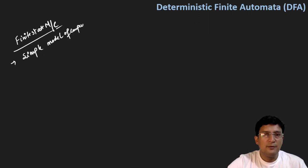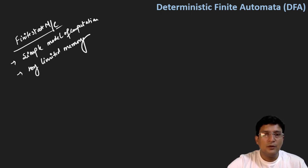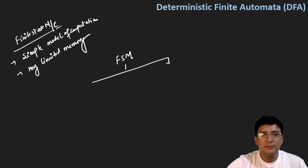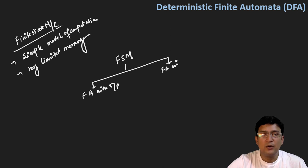It will have very limited memory — that is the limitation. Now, the finite state machine, or in short FSM, can be of two types: one is finite automata with output, and the other is finite automata without output.